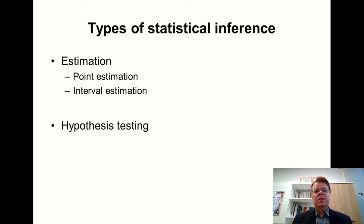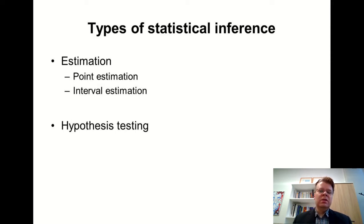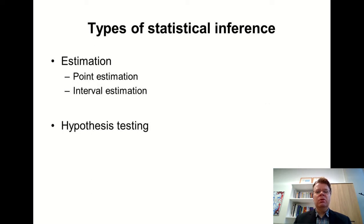In hypothesis testing, the setting is slightly different. There we already have some kind of prior statement about what the true parameter value would be. Based on the data, we want to assess how likely it is that this prior hypothesis is true or false. In estimation, we do not have any prior hypothesis about the parameter value — we just want to estimate this value.